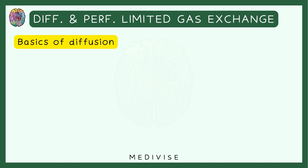So what exactly is diffusion? Diffusion is a process of movement of molecules under a concentration gradient. To explain this further, I will take 2 places — Place A and Place B.